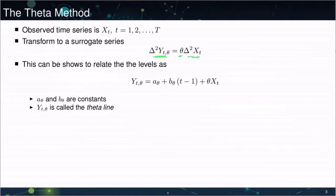In fact, with this structure, one can actually show that the levels of the series are going to be related to Yt of theta. It's going to depend on two constants, t minus 1, which is just a standard time trend, and then theta times Xt.